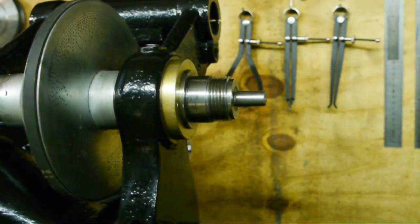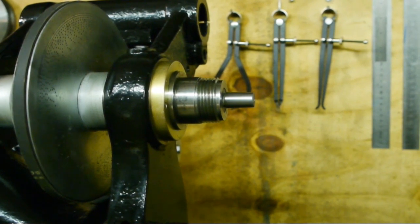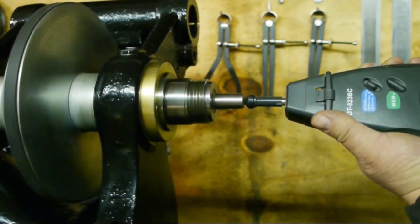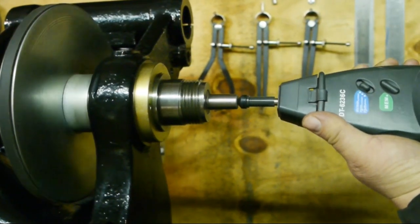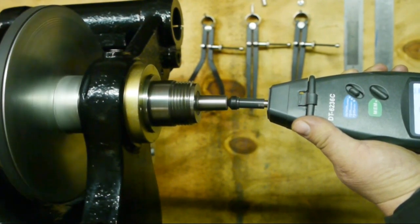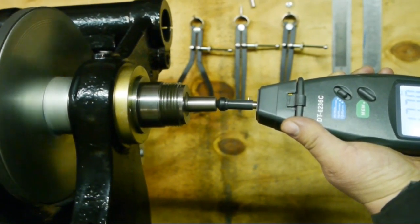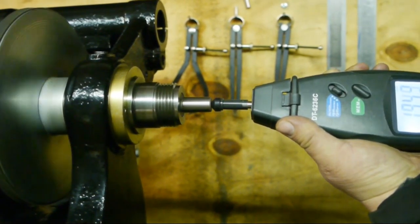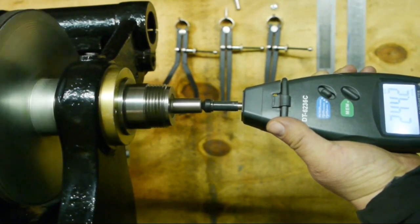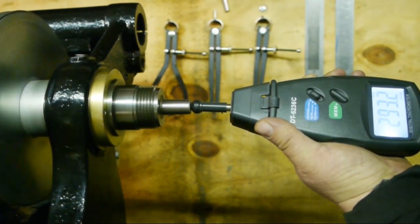So now I'm going to measure the speed for all three pulley settings at different frequencies starting with 10 Hertz. This is 10 Hertz, that's about 50. 20 Hertz, about 100. 30 Hertz, about 150. 40 Hertz, almost 200. 50 Hertz, almost 250. And 60 Hertz, about 290.